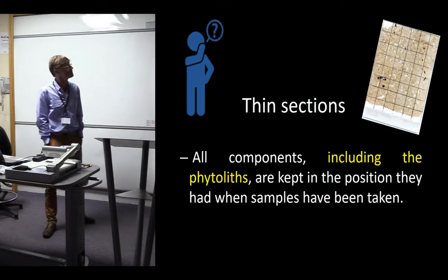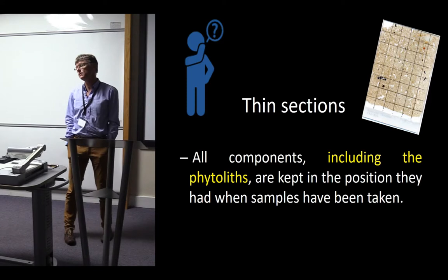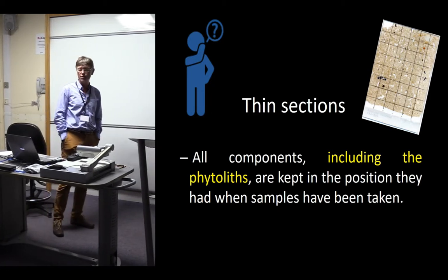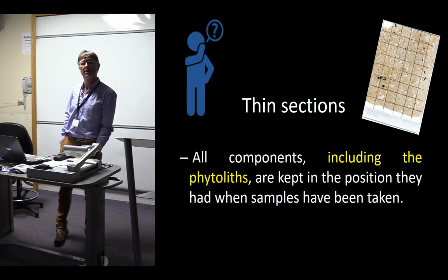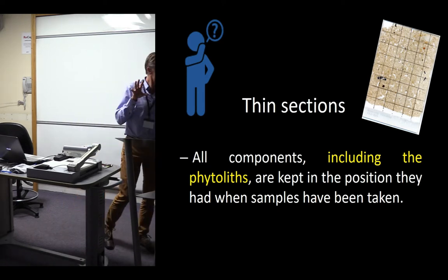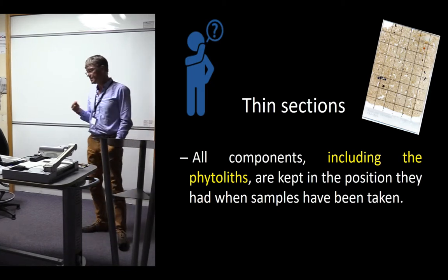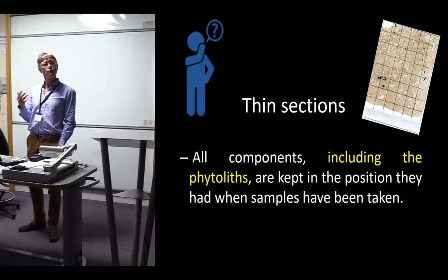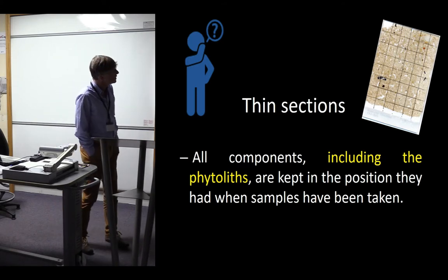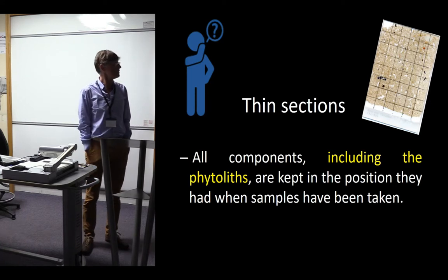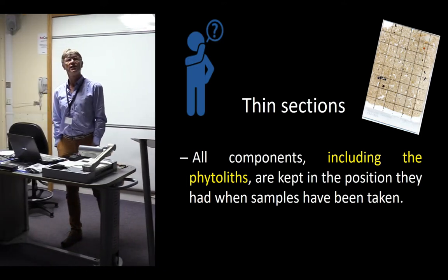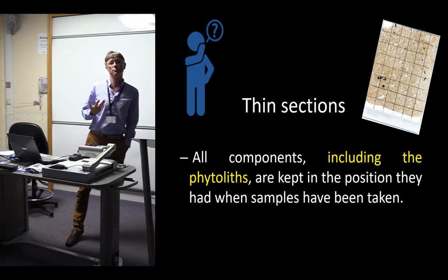However, we have thin sections. Thin sections preserve the relative distributions of the phytoliths and their relation to other components, which helps us discriminate between their origin and depositional history. The purpose of this lecture is to introduce the latest developments in phytolith analysis of thin sections, based on data from dark earth units — archaeological units with complex formation processes. If such studies can be achieved for dark earth, they can certainly be done for other archaeological units with less complex formation histories.